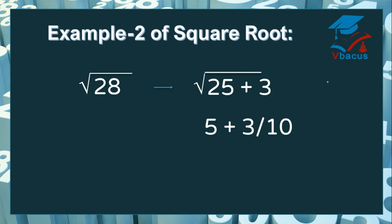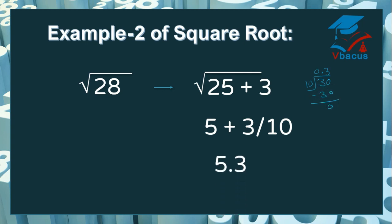Let us divide 3 by 10. You cannot divide 3 by 10, so insert decimal and insert 0. 10 threes are 30. So your answer will become 5.3.